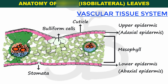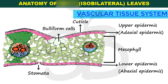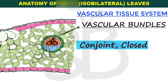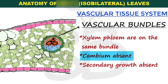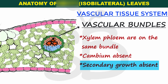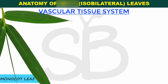Now we will discuss the vascular tissue system. Vascular bundles in the monocot leaf are conjoint and closed type. Conjoint meaning xylem and phloem are joined together in the same bundle. Closed meaning secondary growth is not allowed — cambium is absent — so the xylem and phloem remain in the same bundle permanently.